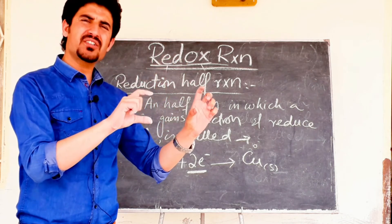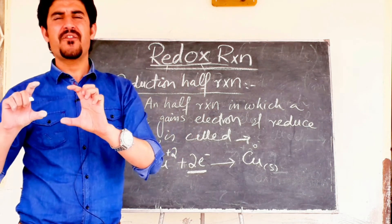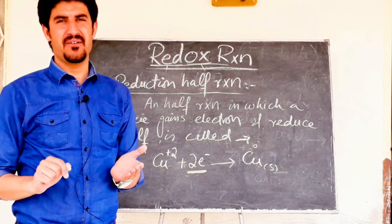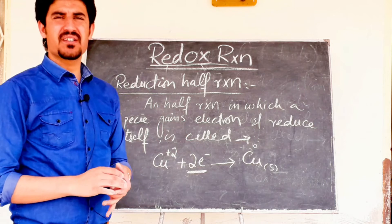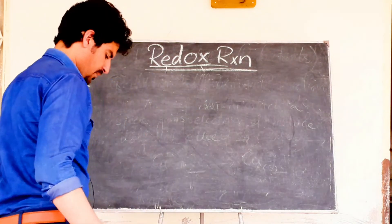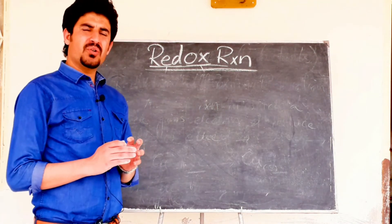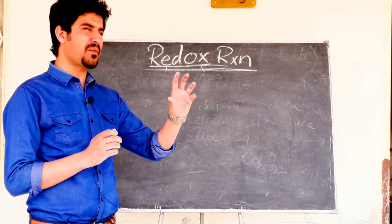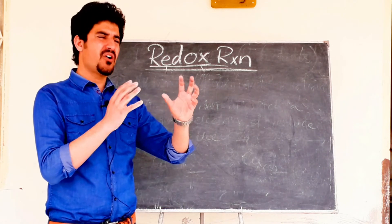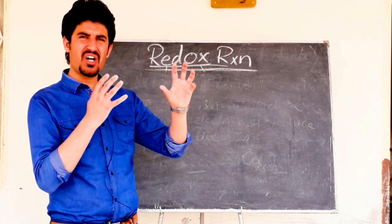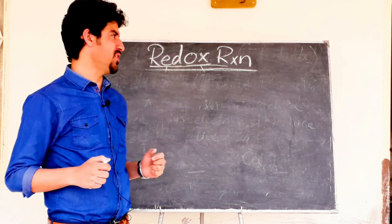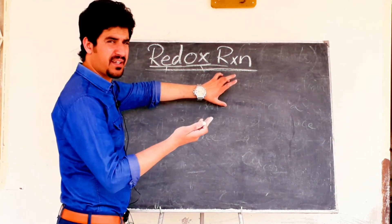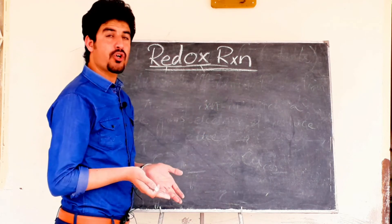So the net redox reaction is the combination — the sum — of the oxidation half reaction and the reduction half reaction. When we add the oxidation half reaction and the reduction half reaction together, we get a complete redox reaction.